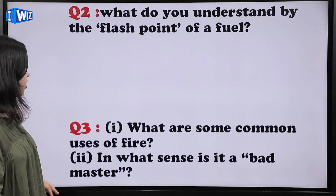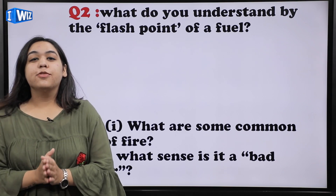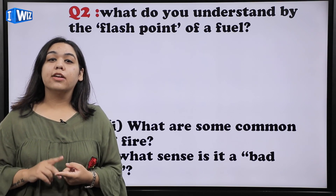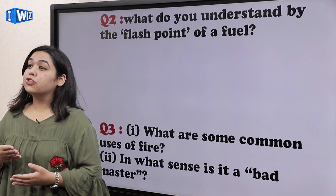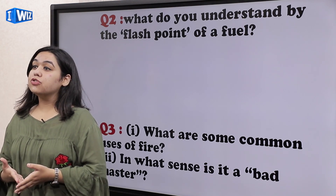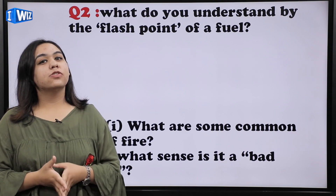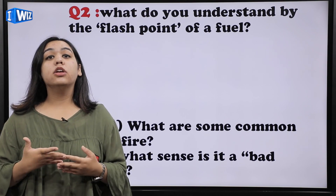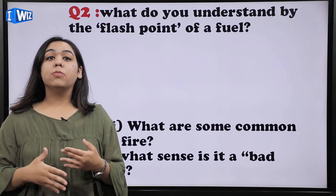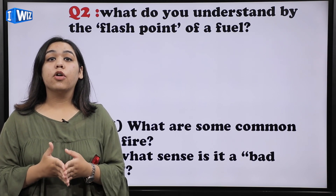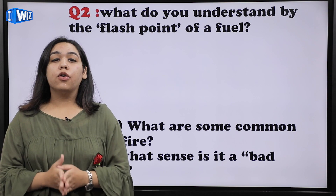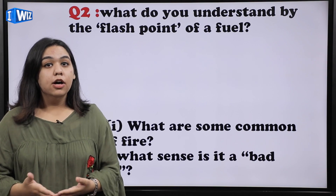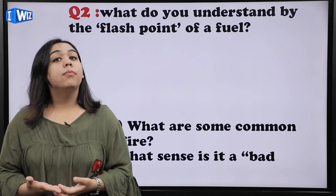Moving on to the next question: what are some common uses of fire? We have discussed this in the chapter — fire is used in our houses for cooking, it is also used to generate electricity, and it is also used to warm our houses in winter. Those are the basic uses of fire. In what sense is it a bad master? Fire is a bad master when we cannot control it — it is not in our control — and a lot of mishappenings take place, homes and shops are burnt, and thousands of forests are destroyed because of fire.